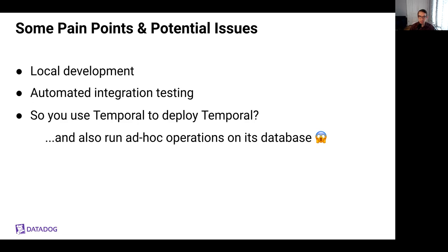Another pain point is automated integration testing, or sometimes lack thereof. We have a staging Temporal cluster that folks generally use for manually validating changes end-to-end before merging their pull requests. But that comes with all of the shared staging problems, like non-production-like dependencies or broken dependencies, and occasionally racing with other engineers to find a window for testing a change to a common piece of code. The last point is that we do use Temporal to deploy Temporal, which introduces some interesting continuous bootstrapping challenges.